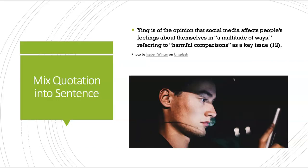Another thing you can do is mix the quotation into your sentence. For example: 'Ying is of the opinion that social media affects people's feelings about themselves in a multitude of ways, referring to harmful comparisons as a key issue.' Here, the author's exact words are placed in quotation marks, and the rest are the student's original words — paraphrasing. You still need a signal phrase, and you always put quotation marks around the author's exact words.